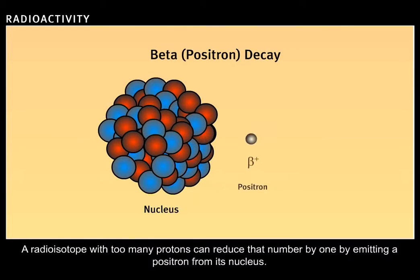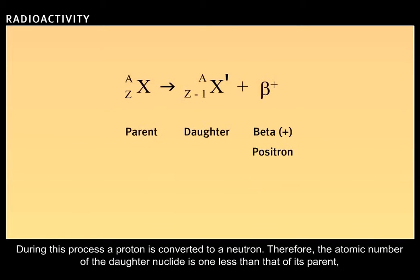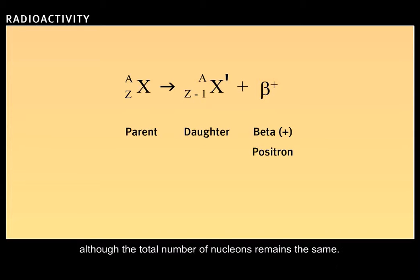A radioisotope with too many protons can reduce that number by one by emitting a positron from its nucleus. During this process, a proton is converted to a neutron. Therefore, the atomic number of the daughter nuclide is one less than that of its parent, although the total number of nucleons remains the same.